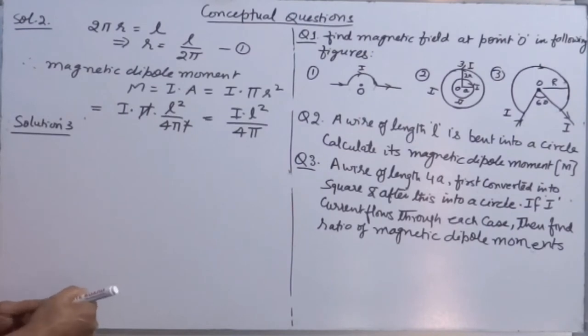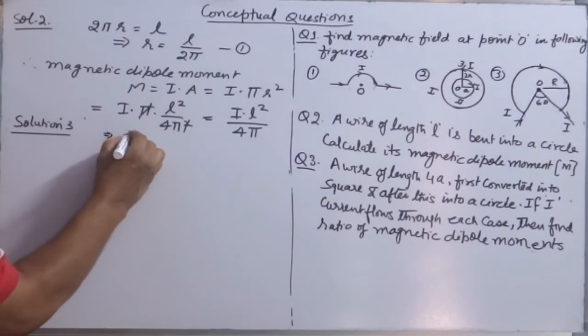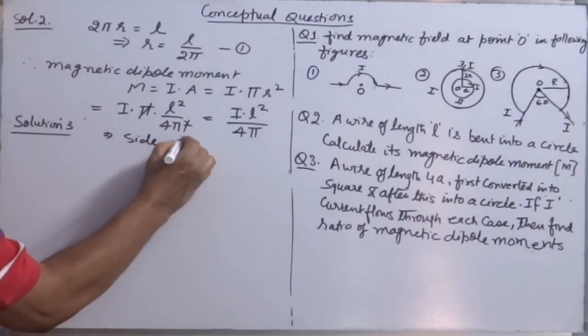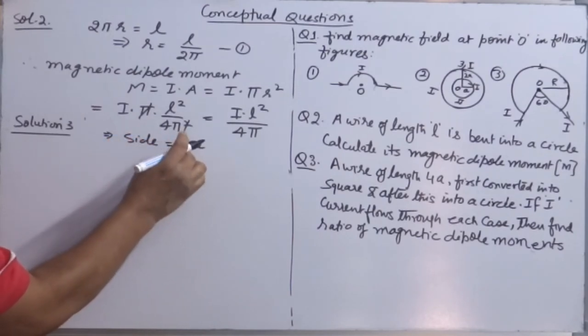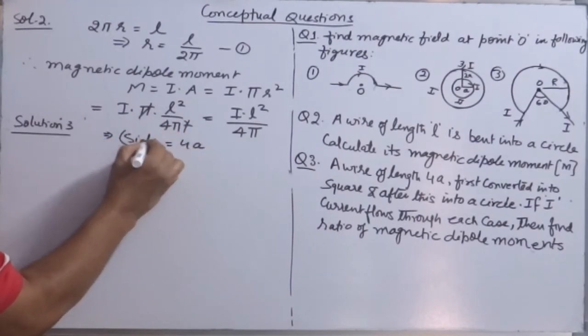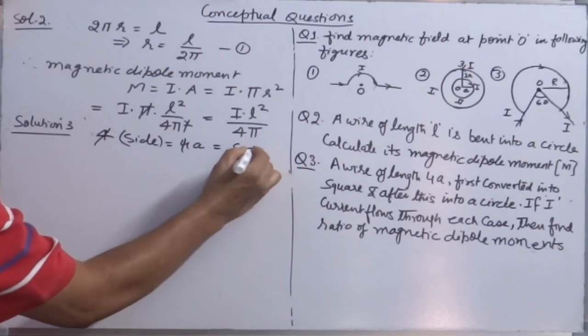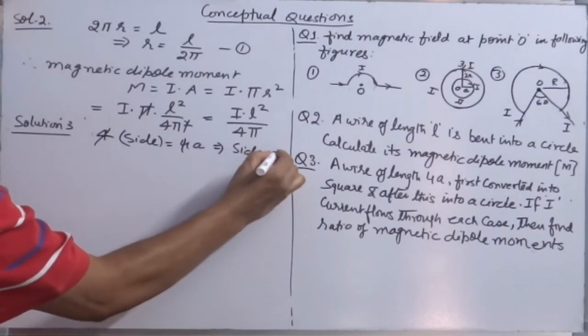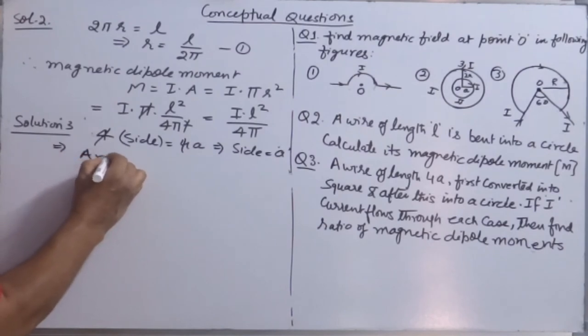If I is the current flowing through each case, find the ratio. Total length: 4 × side = 4A. So side = A.